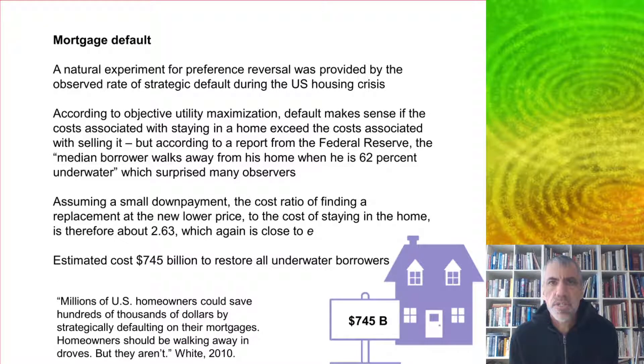Usually these cognition experiments are done in controlled settings with experimental surveys, but a natural experiment for preference reversal was provided by the observed rate of strategic default during the US housing crisis.